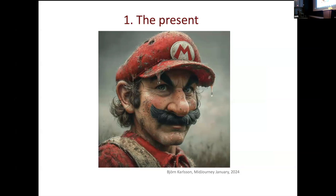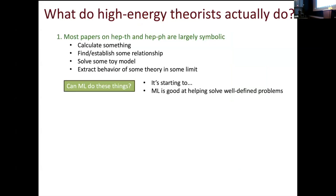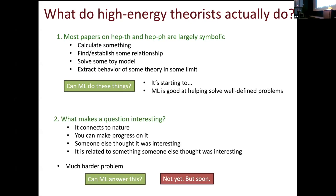That gets me to what's going on in the present. If you look at the archive — hep-th or hep-ph — and see what these papers are actually about: a lot of them are calculating something. A good paper should actually calculate something, or establish some relationship, or solve some toy model, or extract some behavior in some limit. These are general abstract things that theorists do, but it isn't exactly what machine learning is doing — they're not really solving things analytically. Machine learning is starting to do this, and I want to understand to what extent it can help with these more formal problems.